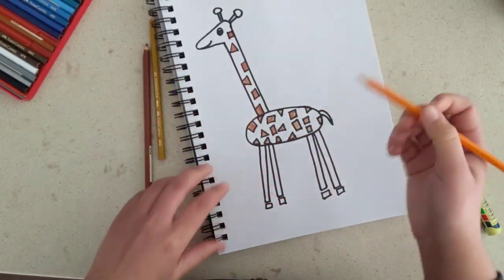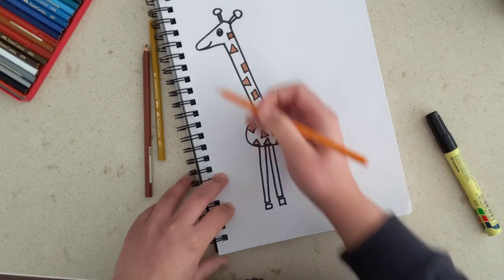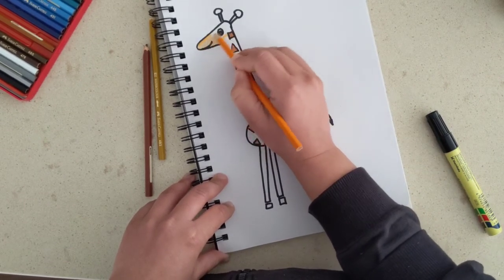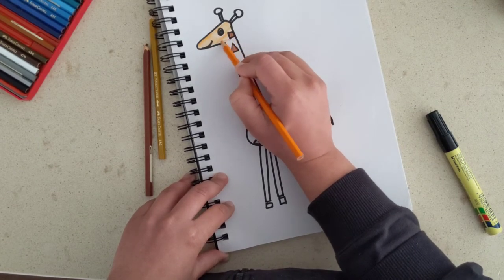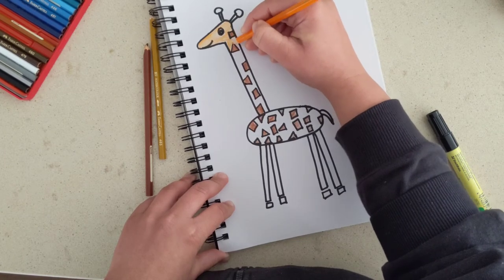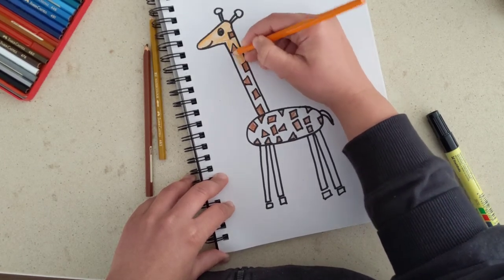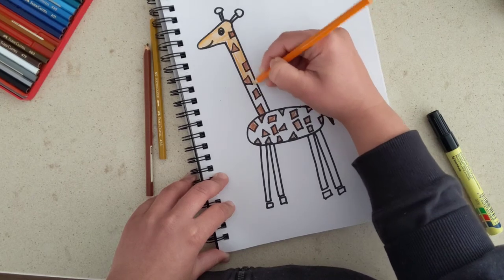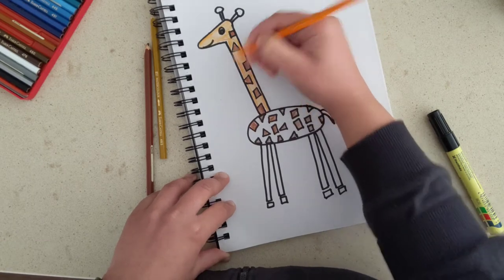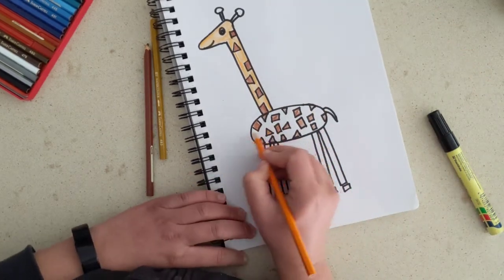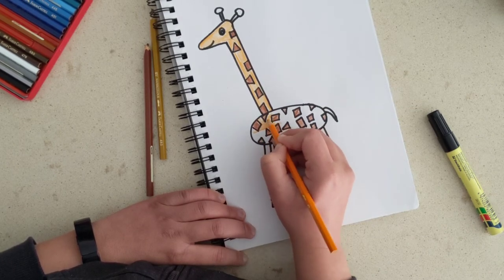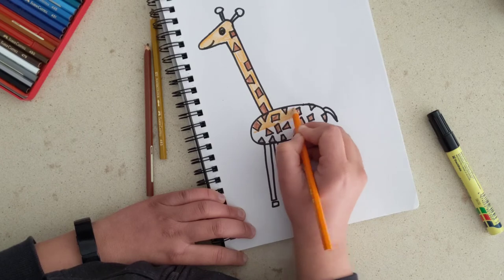The next color we take is orange, and color the rest of the body. Let's start with his face. Coloring around the eyes, just careful not to color inside the eyes, and the long neck. Perfect. We have colored his neck. Now I am going to color his tummy, coloring around those patches we have made.